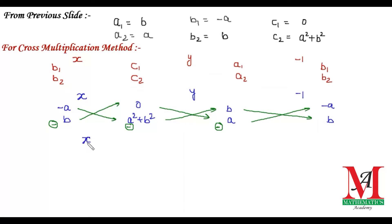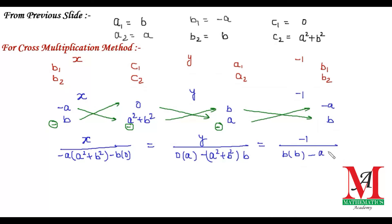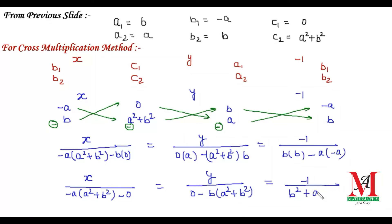We get x over: multiply minus a with (a² plus b²), minus b multiplied with 0, equals y over: 0 multiplied with a, minus (a² plus b²) multiplied with b, equals minus 1 over: b multiplied by b, minus minus a multiplied by a. On simplification: x over minus a(a² plus b²), since b into 0 is 0; y over 0 minus b(a² plus b²); equals minus 1 over b² plus a².